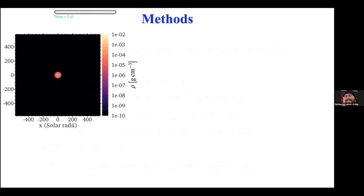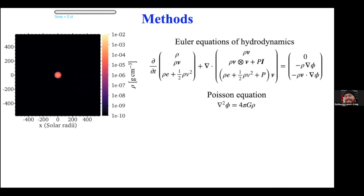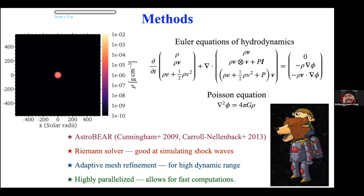For our global simulations, we start in a fairly large box compared to the size of the system. The primary star and the companion are shown with the core of the primary as a purple dot and the companion as a red dot, and the plot shows density. There's a huge dynamic range in the density, pressure, temperature, and scale height, which is why this is challenging to simulate. We solve the Euler equations of hydrodynamics along with the Poisson equation, accounting for gravitational interactions between cores and gas including self-gravity. We use the code AstroBear — an adaptive mesh refinement Eulerian code with a Riemann solver, highly parallelized.